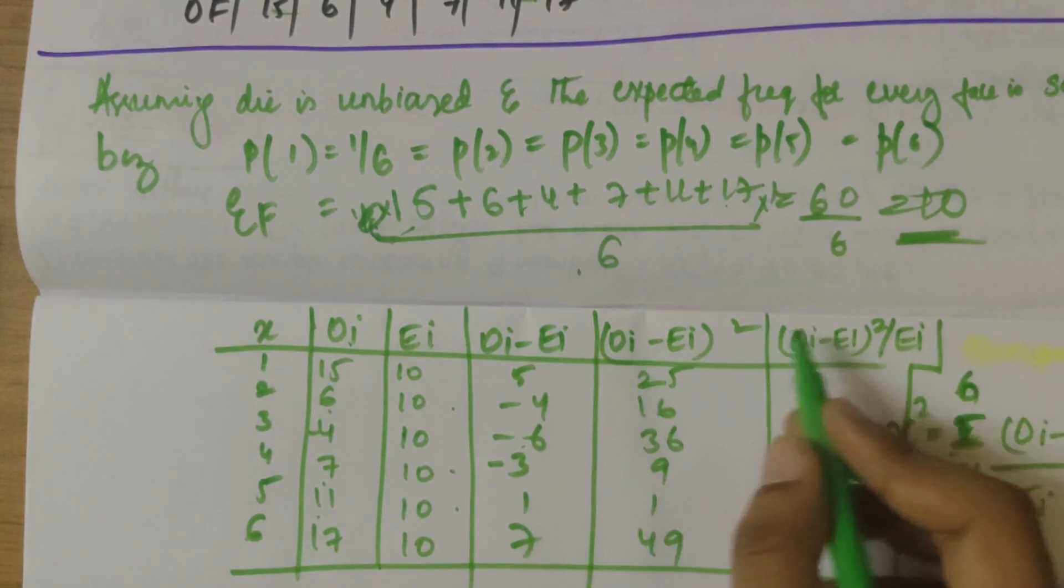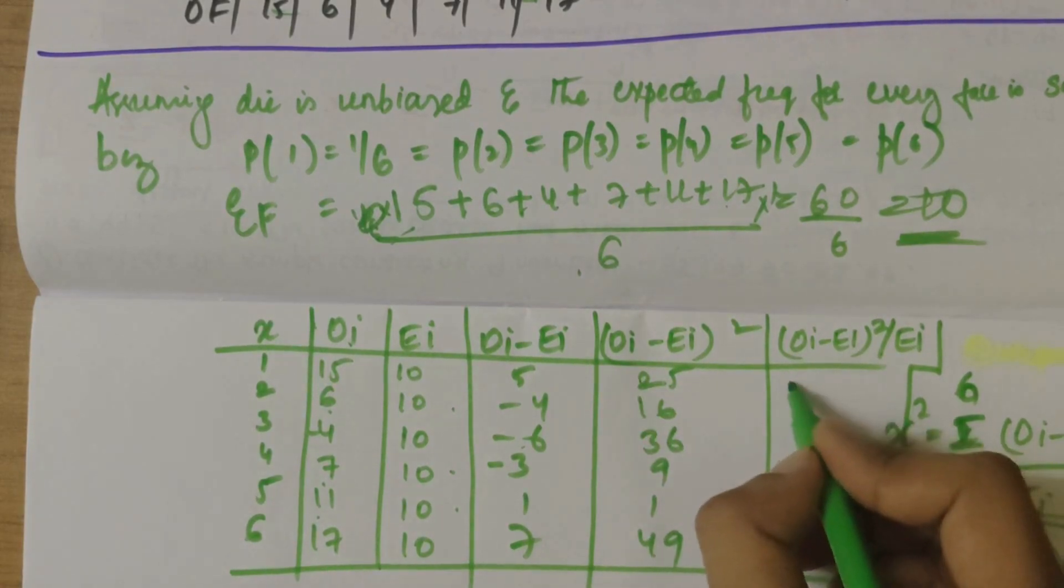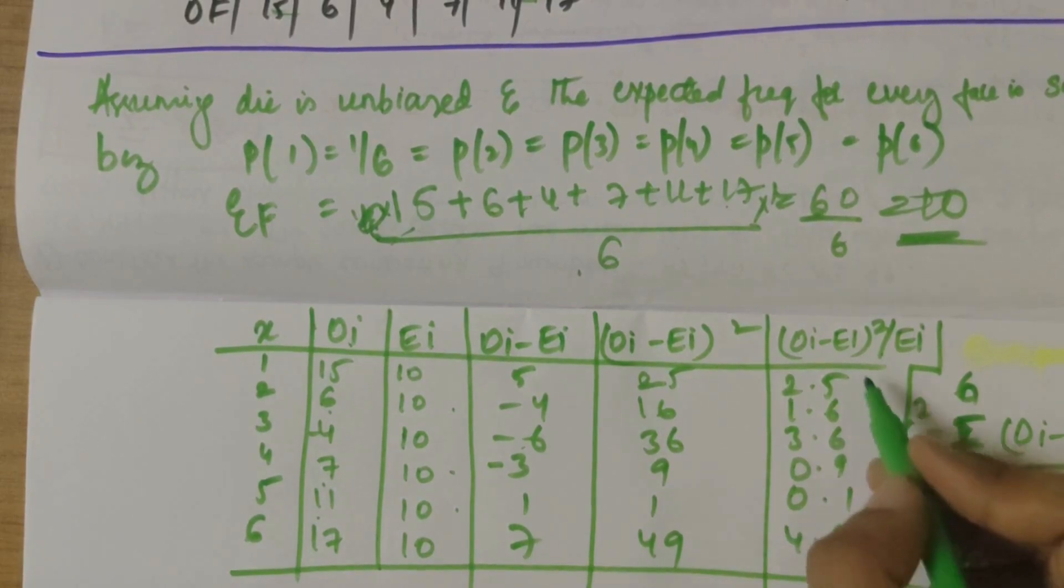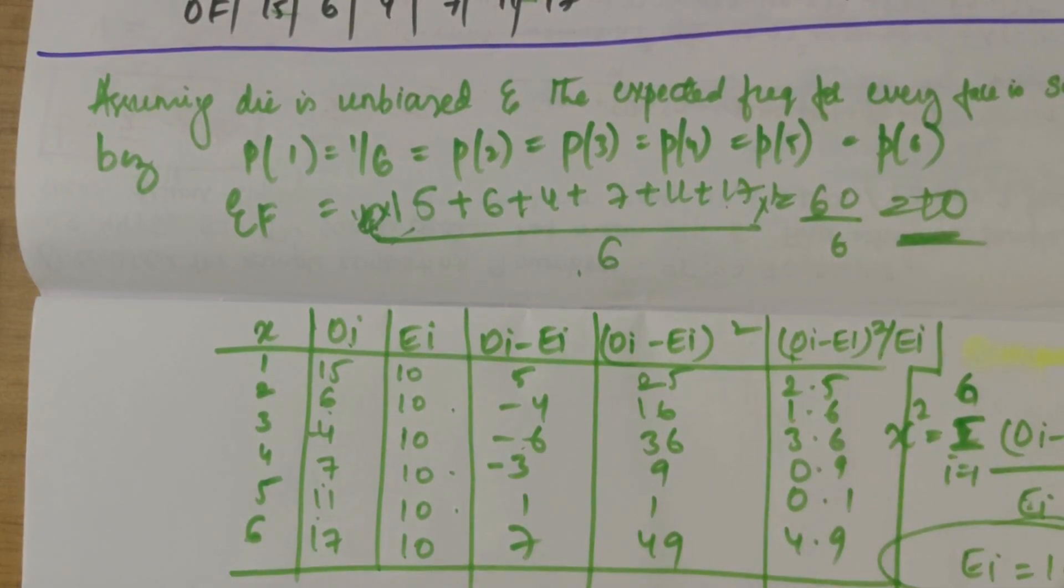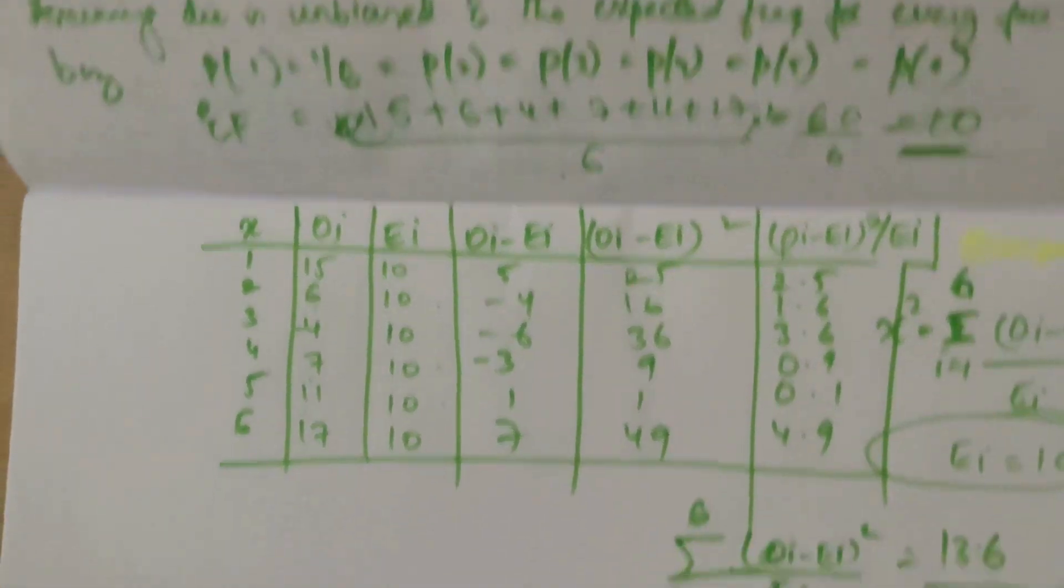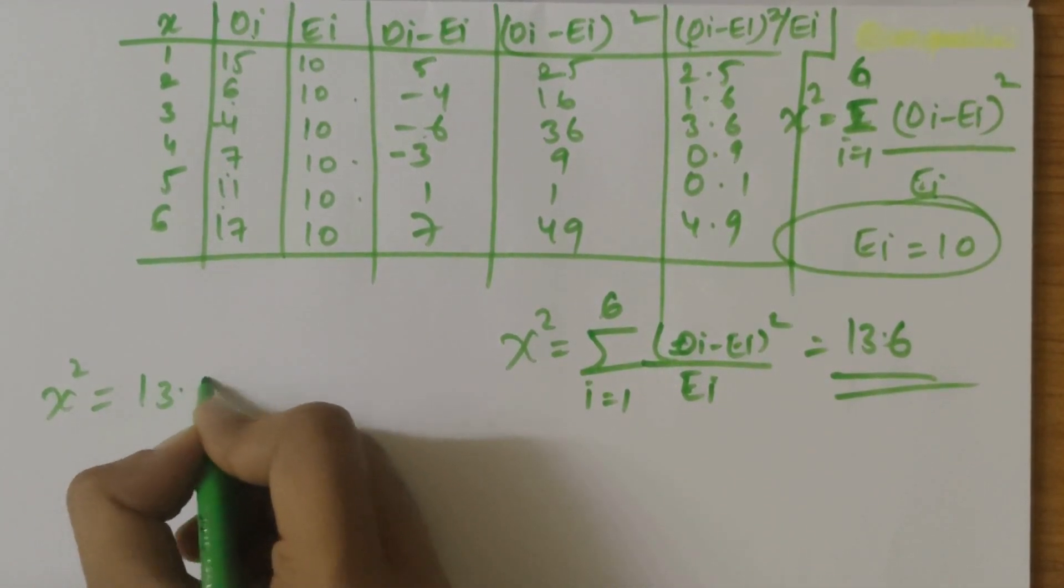So here OI minus EI whole square by EI. EI value we know as 10. So 25 by 10 is 2.5, 1.6, 3.6, 0.9, 0.1, and 4.9. So when you add up all these, you get summation i equals 1 to 6 OI minus EI whole square by EI. When you add up all these, you get 13.6. So chi-square value we have obtained as 13.6.